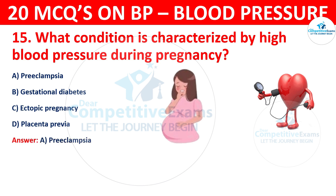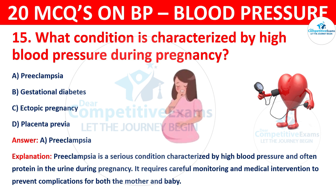The correct answer is A, Preeclampsia. Preeclampsia is a serious condition characterized by high blood pressure and often protein in the urine during pregnancy. It requires careful monitoring and medical intervention to prevent complications for both mother and baby.